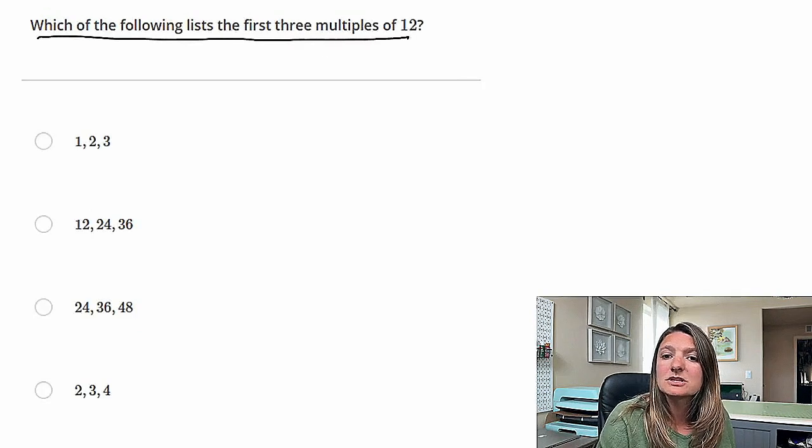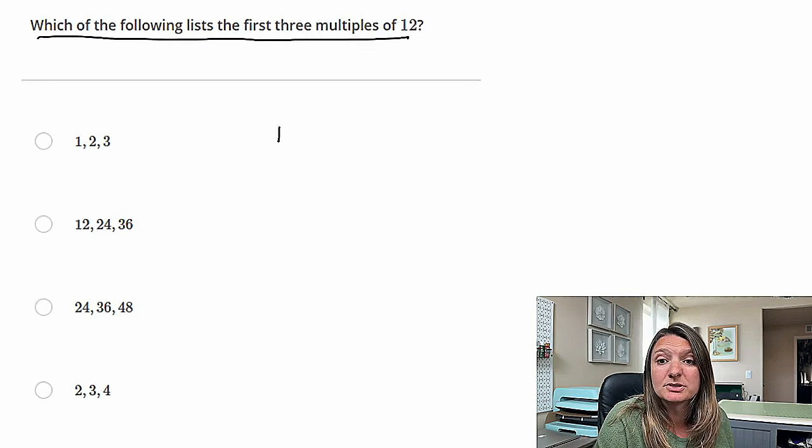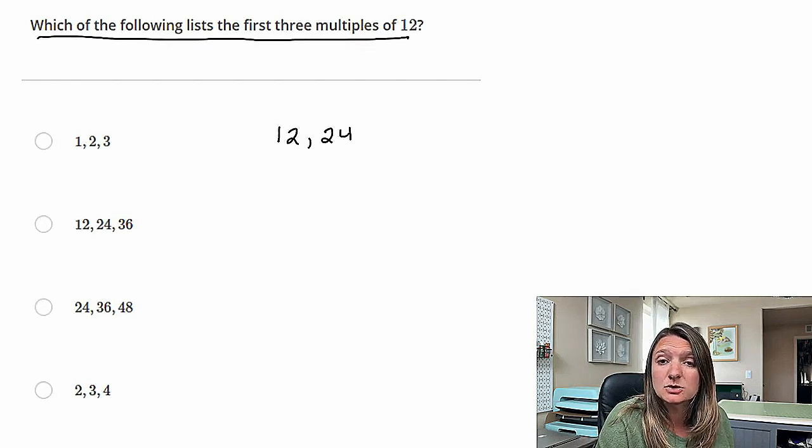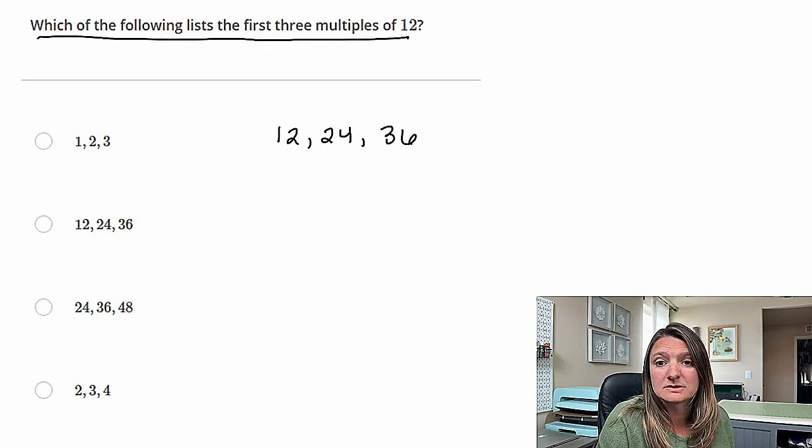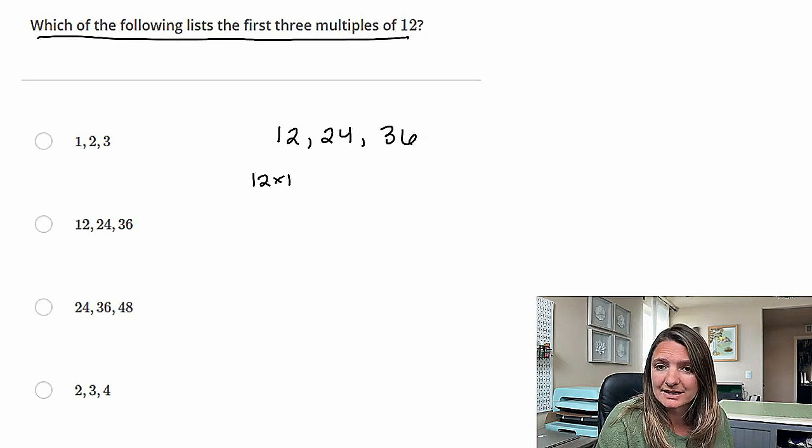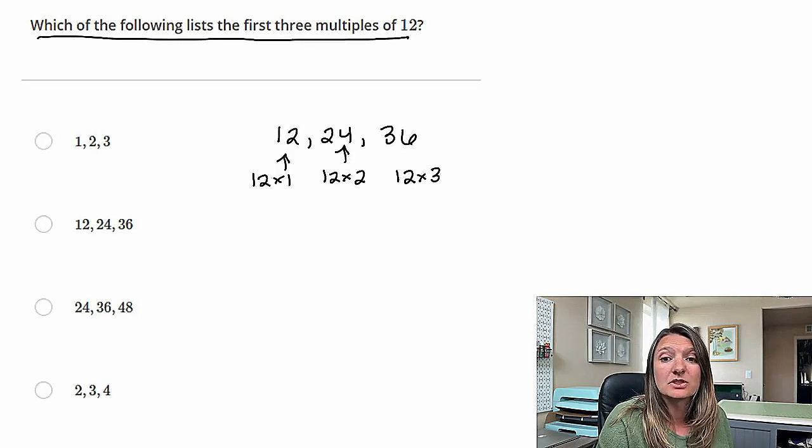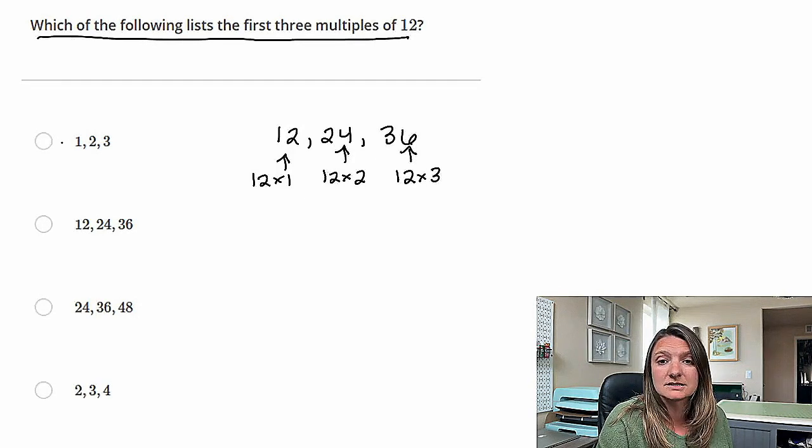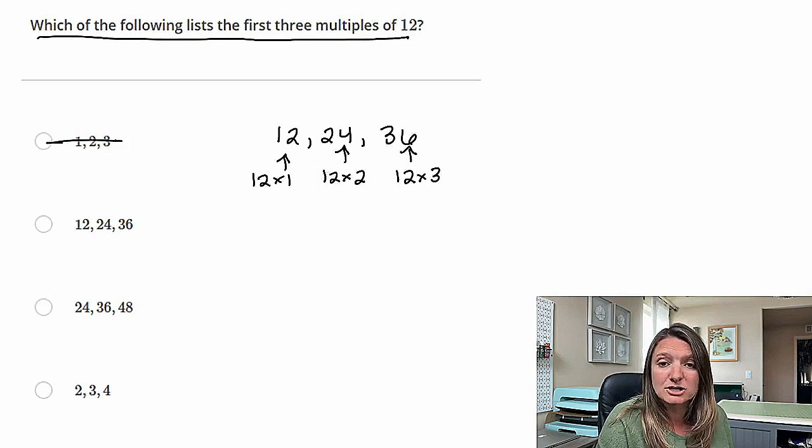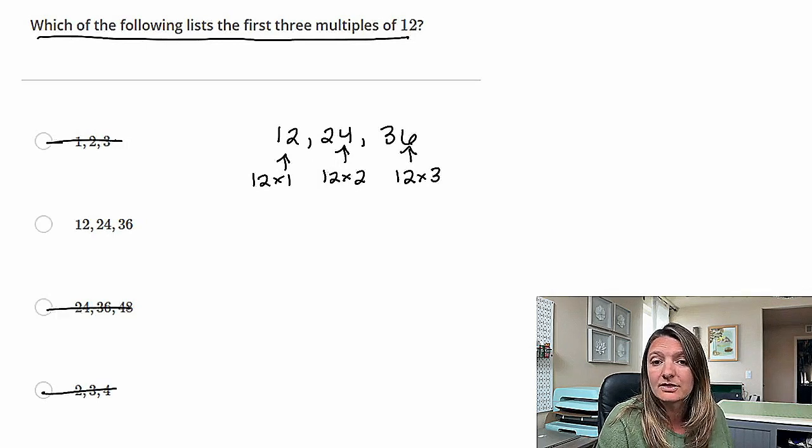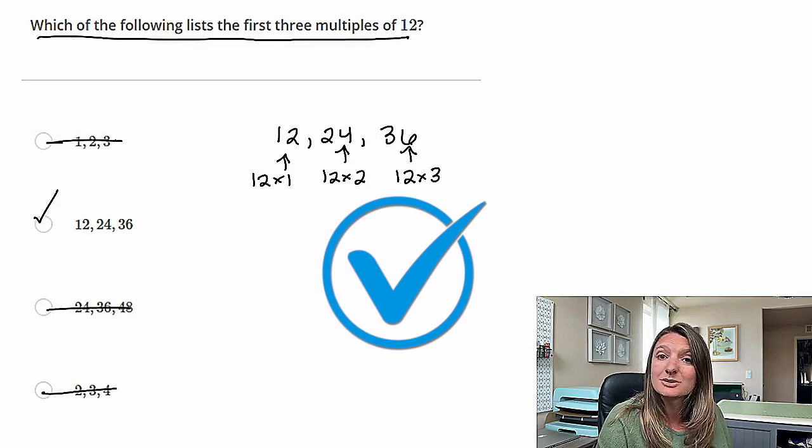Okay, question three. Which of the following lists the first three multiples of 12? So we're going to start at 12. 24 is our next multiple, followed by 36. So how we get that is 12 times 1 is 12. 12 times 2 is 24. 12 times 3 is 36. So basically from there, you just match up which one actually matches 12, 24, and 36, and we are left with answer B.